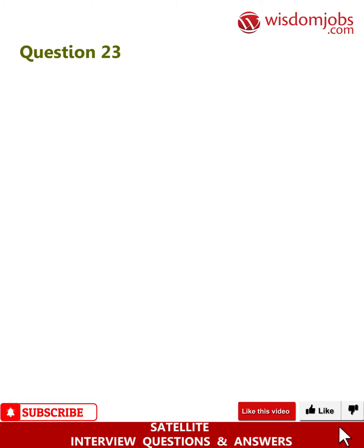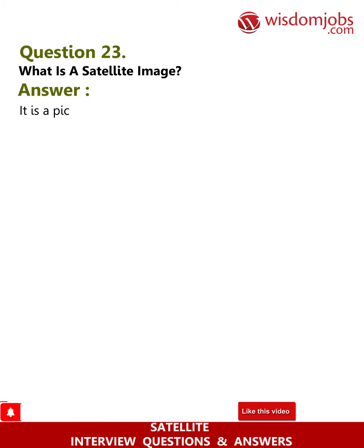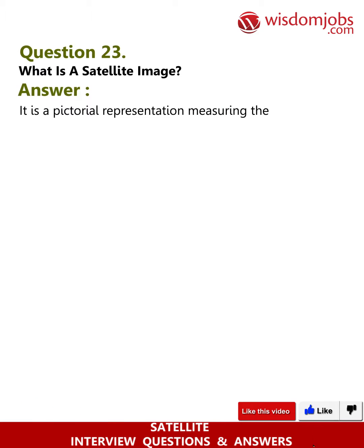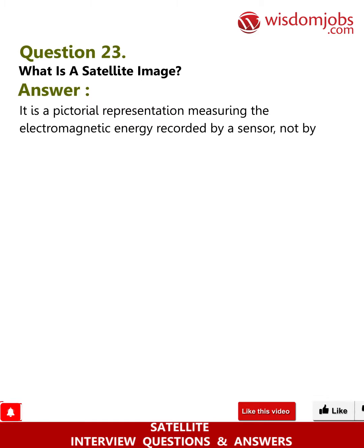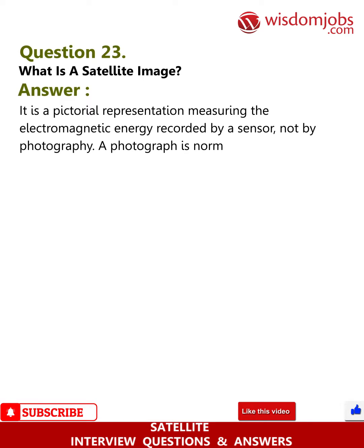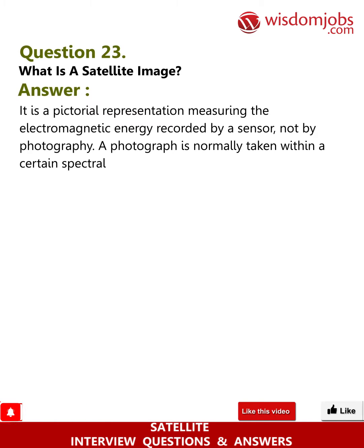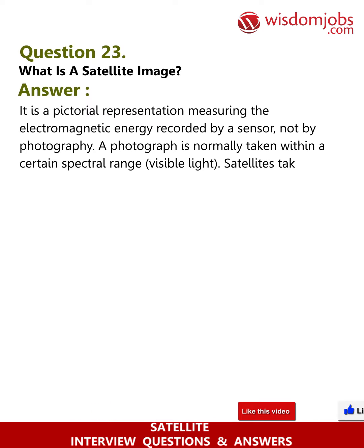Question 23: What is a satellite image? It is a pictorial representation measuring the electromagnetic energy recorded by a sensor, not by photography. A photograph is normally taken within a certain spectral range of visible light, whereas satellites take images outside this limited range.